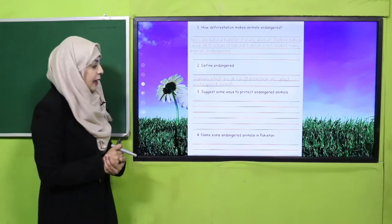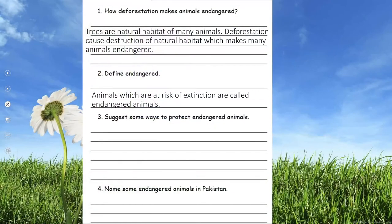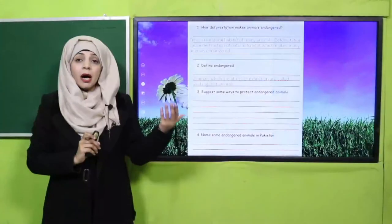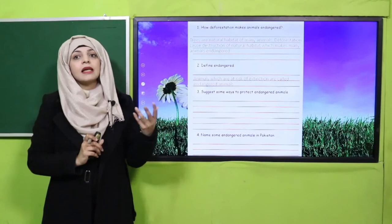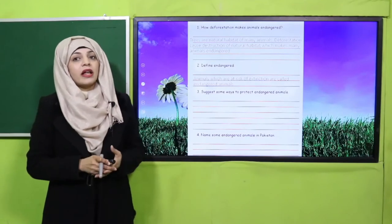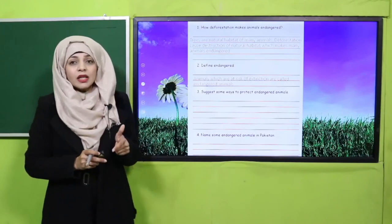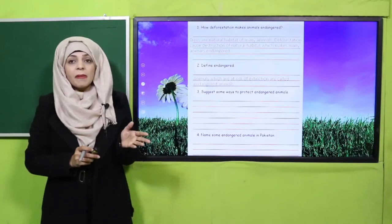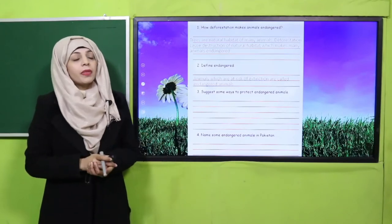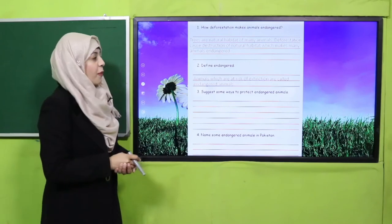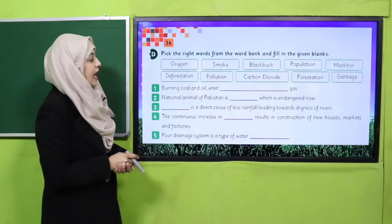Name some endangered animals in Pakistan: Indus River dolphin, Markhor, mountain weasel — these are all endangered animals in Pakistan. Complete this worksheet and submit it to your teacher. From here we will move forward.